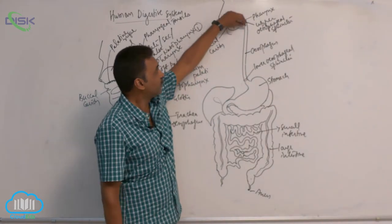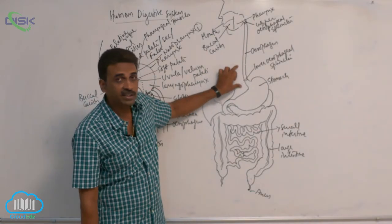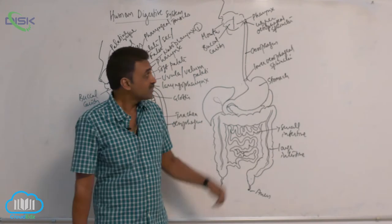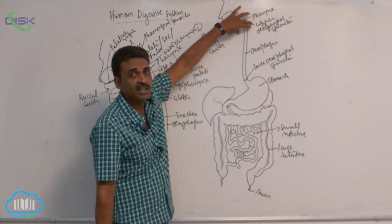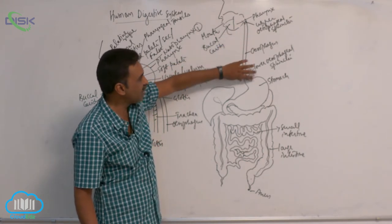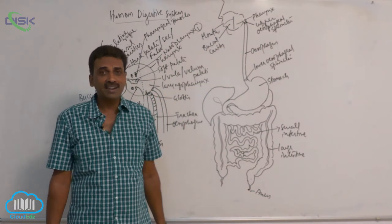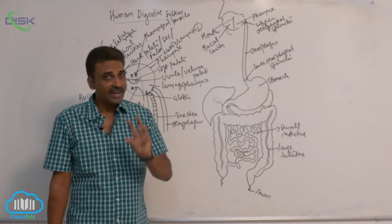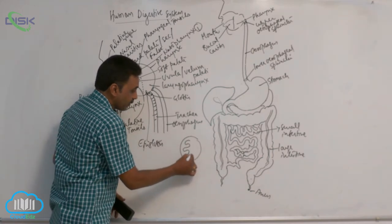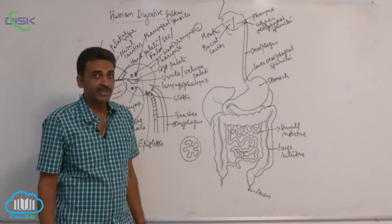The first one-third of the esophagus contains only striated (striped) muscles, the last one-third contains only smooth muscles, and the middle one-third shows a gradual transition from striated to smooth muscle. Inside the esophagus, digestive glands are absent — only some mucus-producing glands are present. In cross-section, the esophagus shows internal folds called rugae (esophageal rugae).